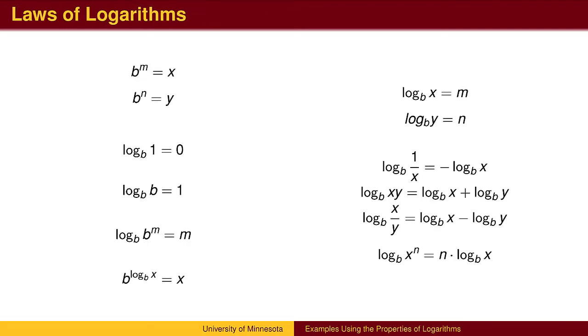Recall the laws of logarithms. Zero is the exponent you put on b to get 1. One is the exponent you put on b to get b. The exponent you put on b to get b to the m power is m. If the exponent you put on b to get x is put on b, you get x.